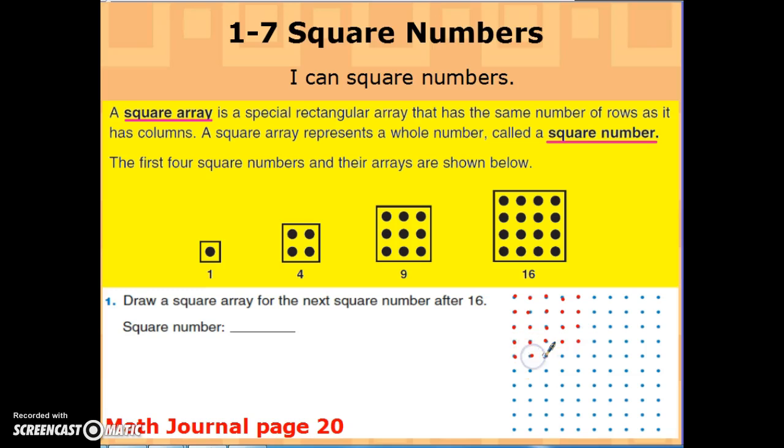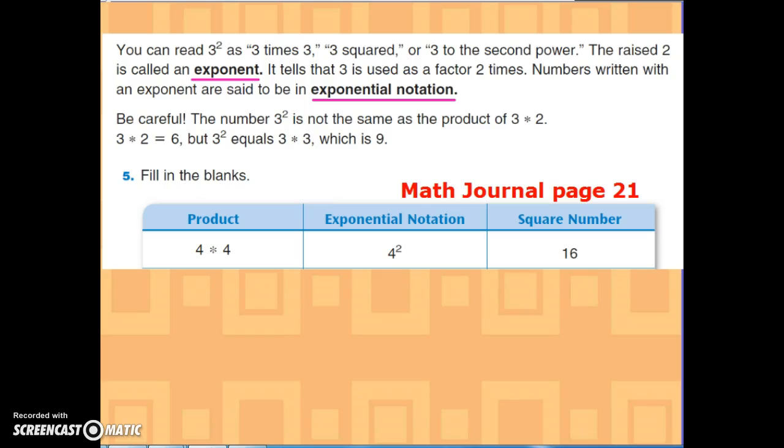So when it's asking for your square number in question number one, 25 is the square number. For each of these, your product—the total number of dots—is your square number. So we're going to write 25.